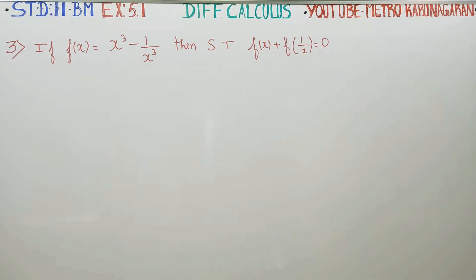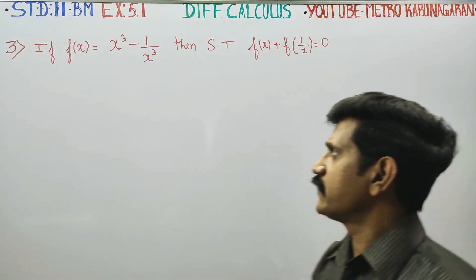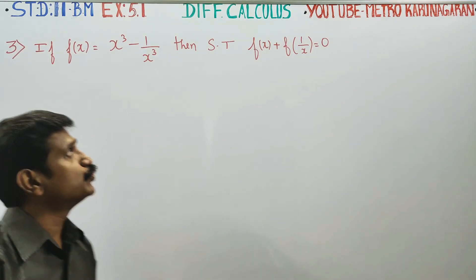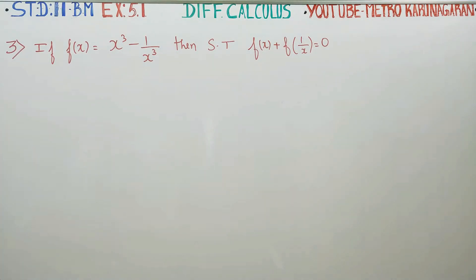Dear 11th Standard Business Maths students, in Exercise 1.1, sum number 3: if f of x is equal to x cube minus 1 by x cube, then show that f of x plus f of 1 by x is equal to 0.